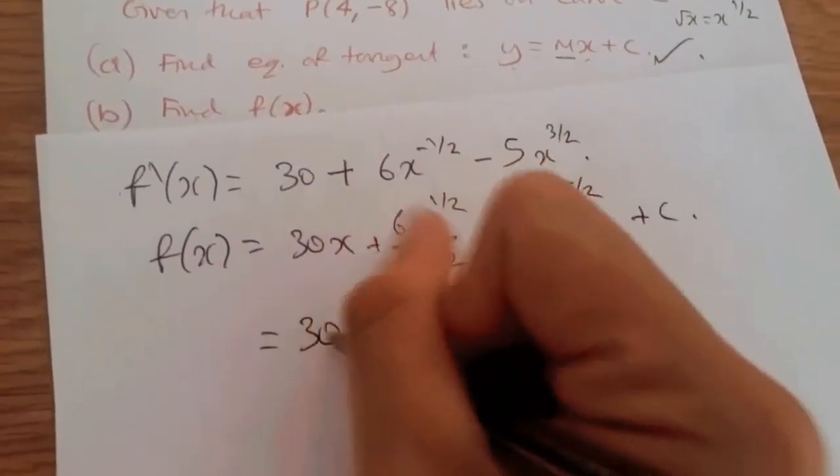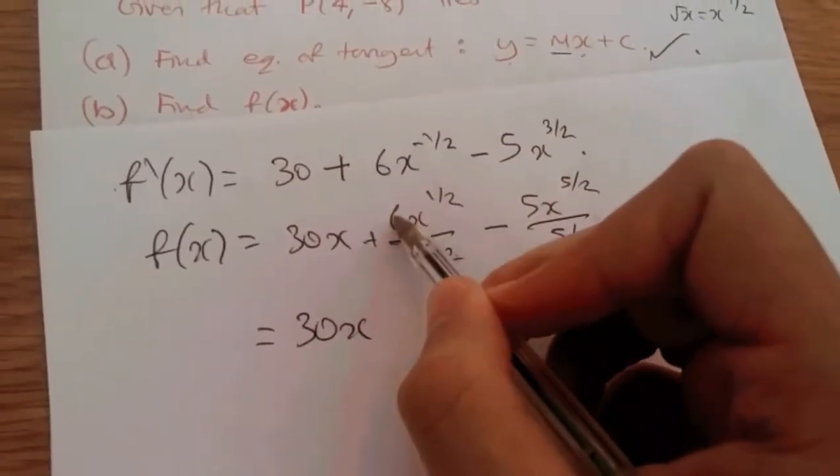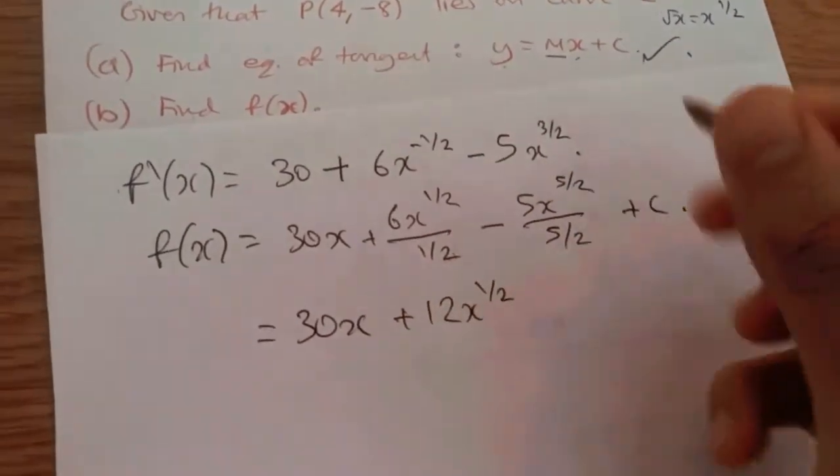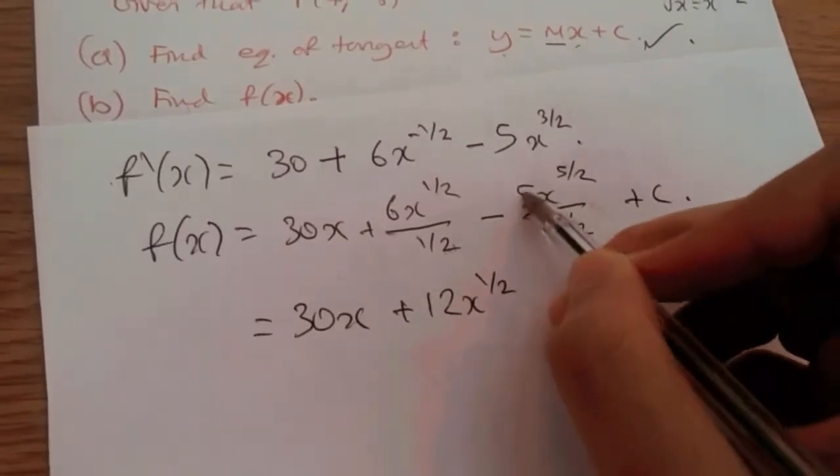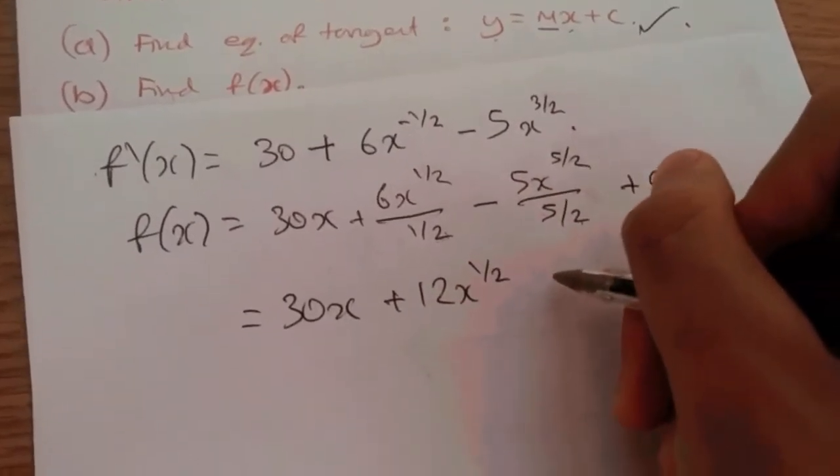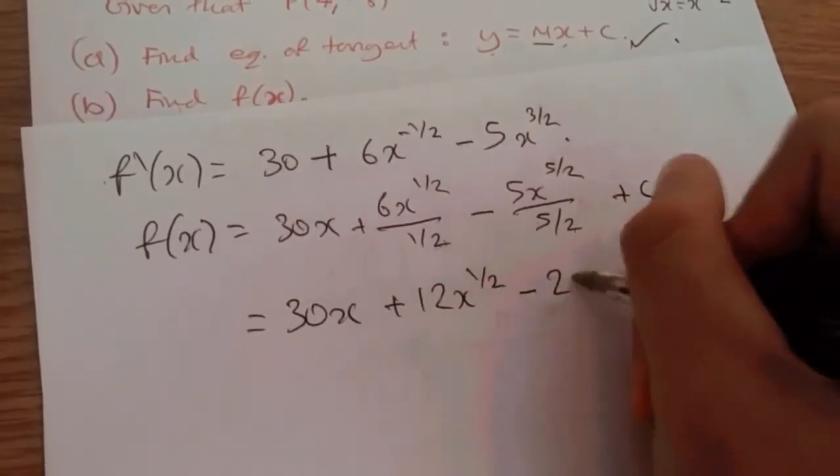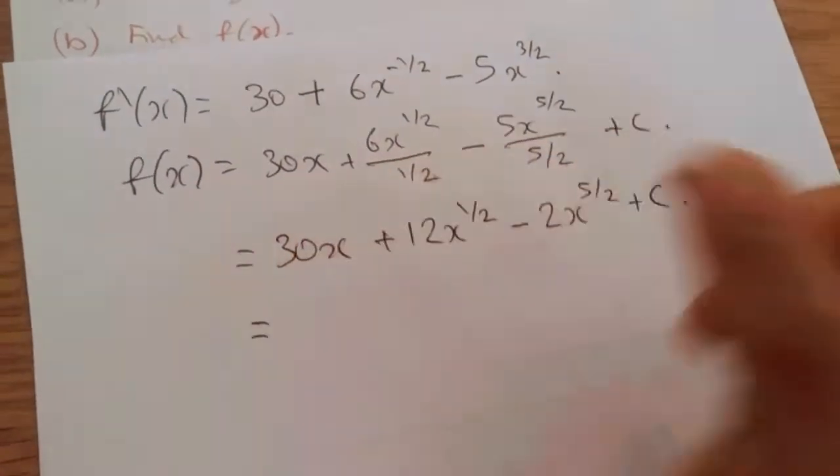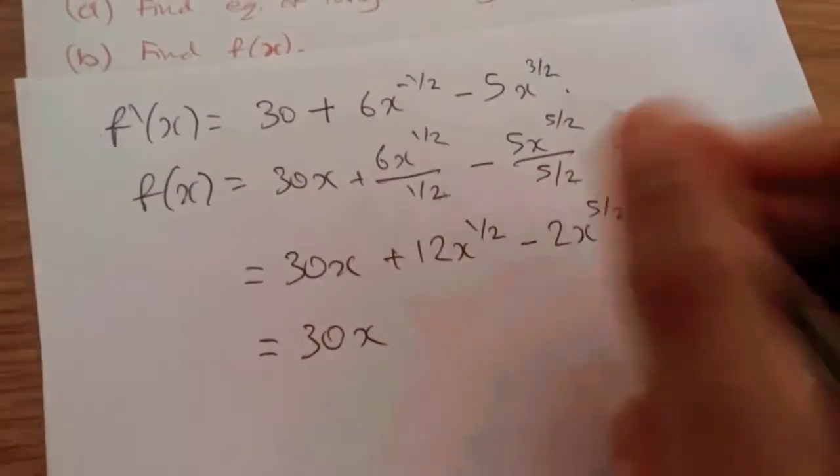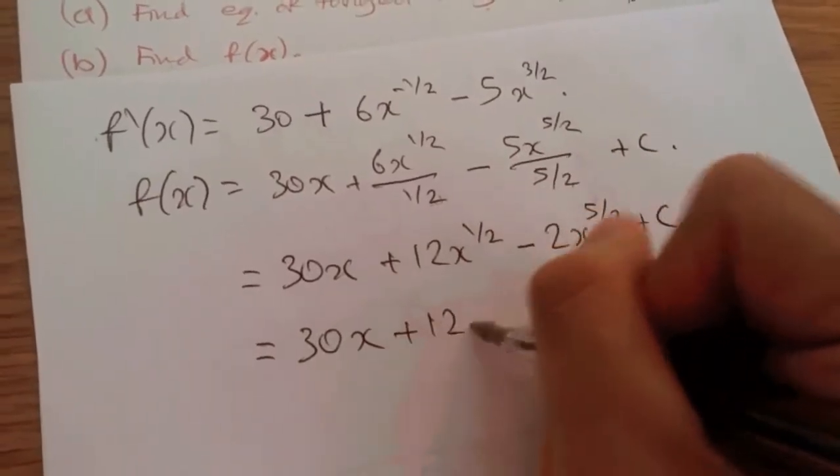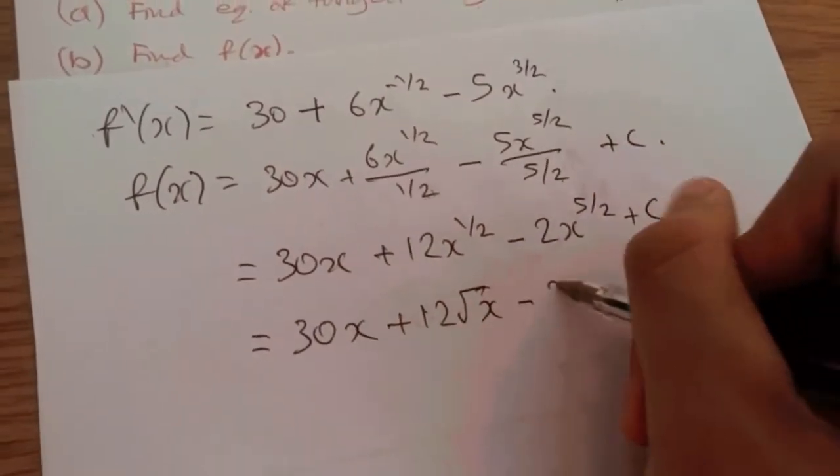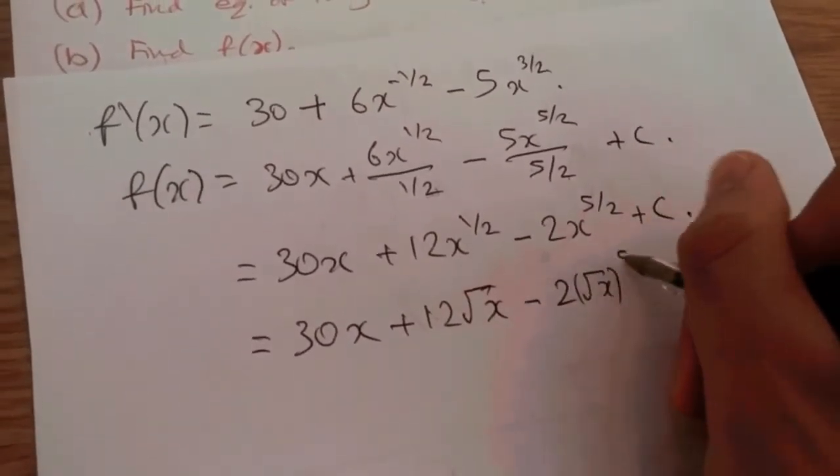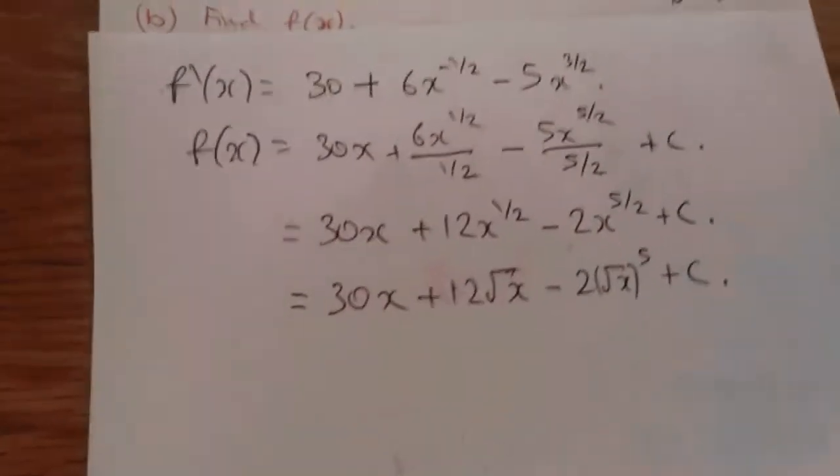Tidying this equation up, we should get 30x. 6 over half, so what we do is just do 6 times 2, which is 12, so it'll just be plus 12x^(1/2). Again, same thing. Divide 5, so it'll be 5 times 2 is 10, 10 over 5 is 2. So it will be minus 2x^(5/2). And again, plus c. And finally, we write this into the standard form, into its original form. x^(1/2) is just simply root x minus 2. Again, this is root x powered by 5, so root x powered by 5.